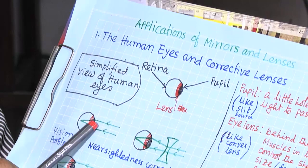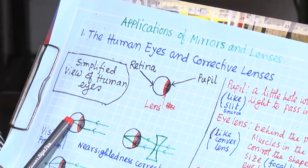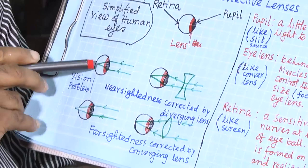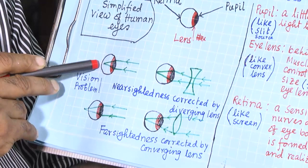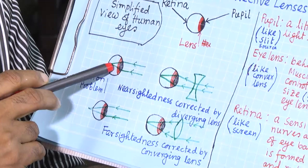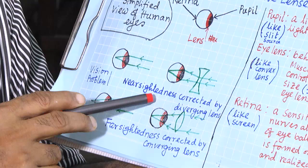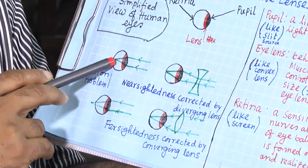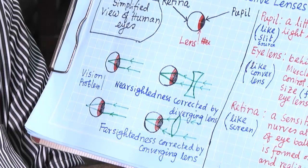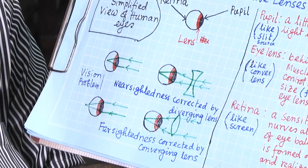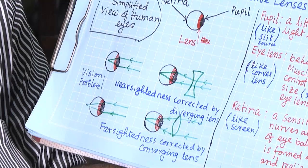This is the human eye, and it is exactly the same as in our lab: we have object, lens, and screen, and we catch the image. Now, if the image of the object passing through the pupil and this light converges through the eye lens, but the image is not falling on the retina — they converge before the retina — it is called near-sightedness.